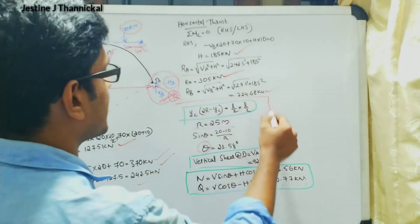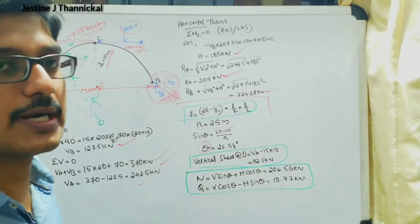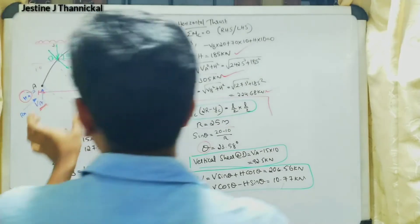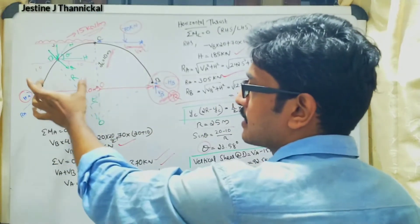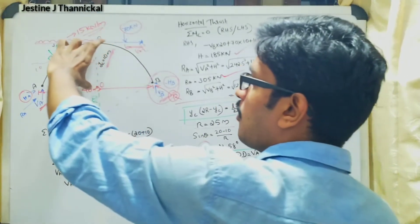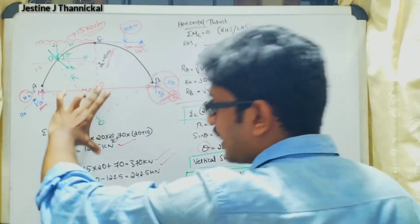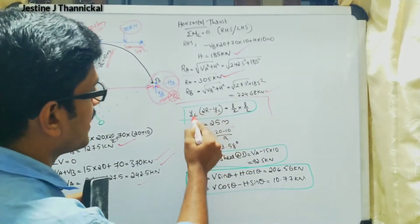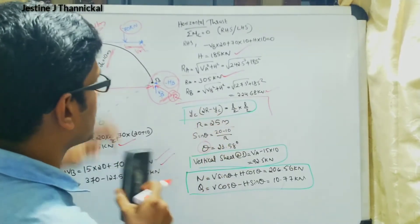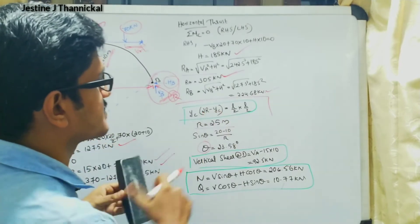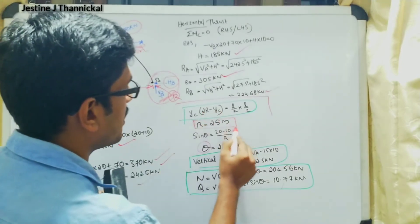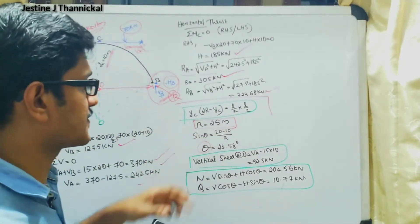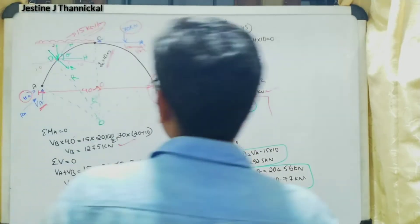Next, we use the segmental property of the circular arch. Taking the half span distance (L/2) multiplied by (L/2) equals yc multiplied by (2R minus yc), where yc is the crown rise (10 meters) and R is the unknown radius of the circle. Solving this equation, the radius R equals 25 meters.